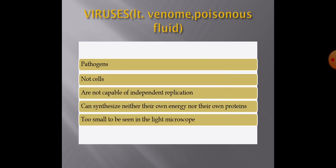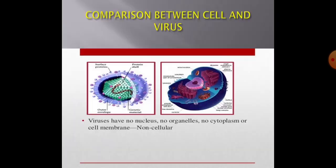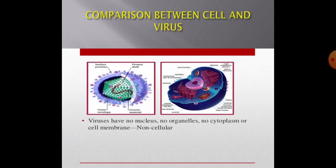The common characteristics of viruses include: number one, they are all pathogens, meaning they are able to cause disease in their host. They are not cells. They are not capable of independent replication. They can synthesize neither their own energy nor their own proteins, and they are too small to be seen in the light microscope.